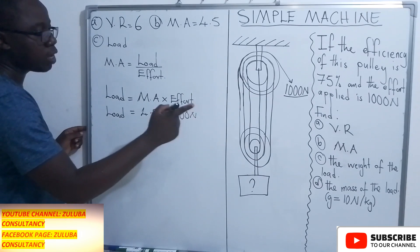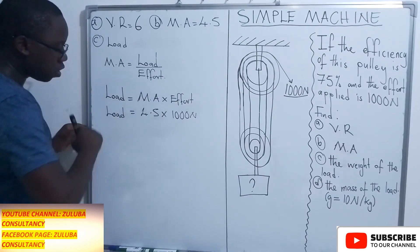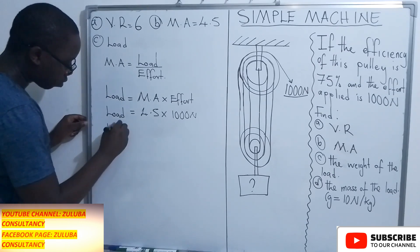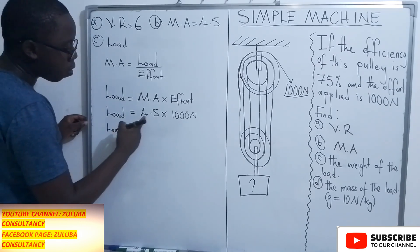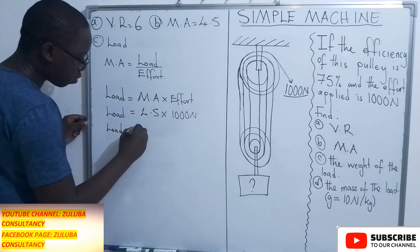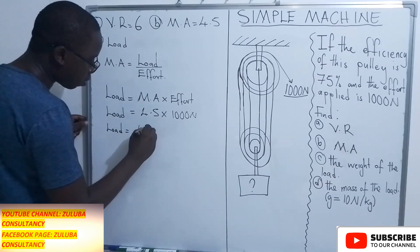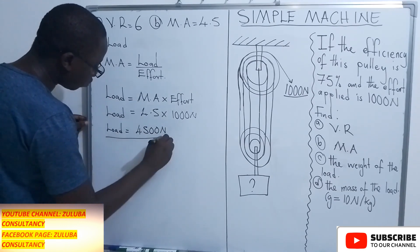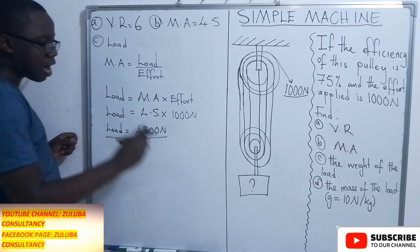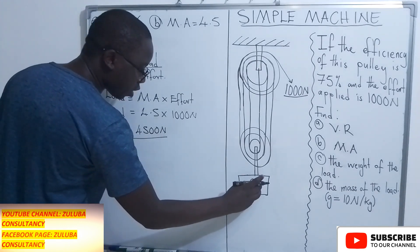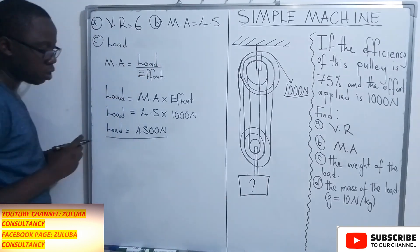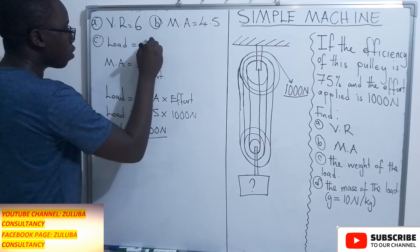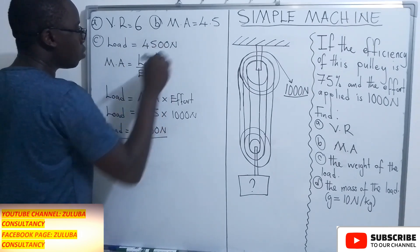Since we are calculating the weight of the load, the load will have the unit of Newtons. So load equals 4.5 multiplied by 1000, which gives us 4500 N. This is the load being lifted by this pulley system.